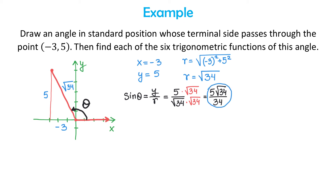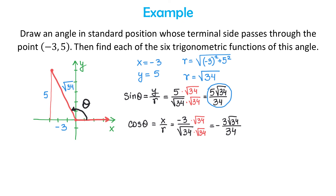Cosine of theta by definition is x over R, so cosine θ = −3 over √34. Rationalizing the denominator gives cosine θ = −3√34 over 34. Tangent of theta is y over x: 5 over −3, written as −5/3.